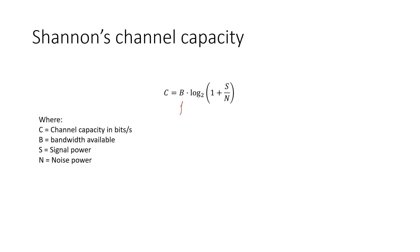We have three input parameters. First of all, the system bandwidth, which represents the range of frequencies that can travel down the communications line. You can calculate this by taking the maximum frequency and subtracting the lowest frequency, but often in questions you would simply be told what the bandwidth is. Be careful to remember that if the bandwidth is 20 megahertz, that means 20 million hertz — not just the number 20 in the formula. The S over N inside the bracket represents the signal-to-noise ratio: S being the signal power level and N being the noise power level.